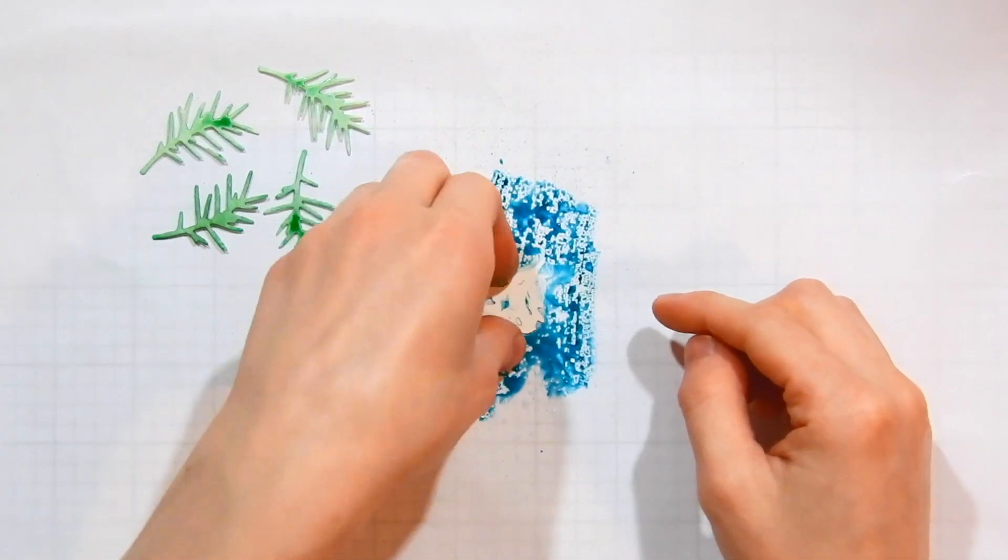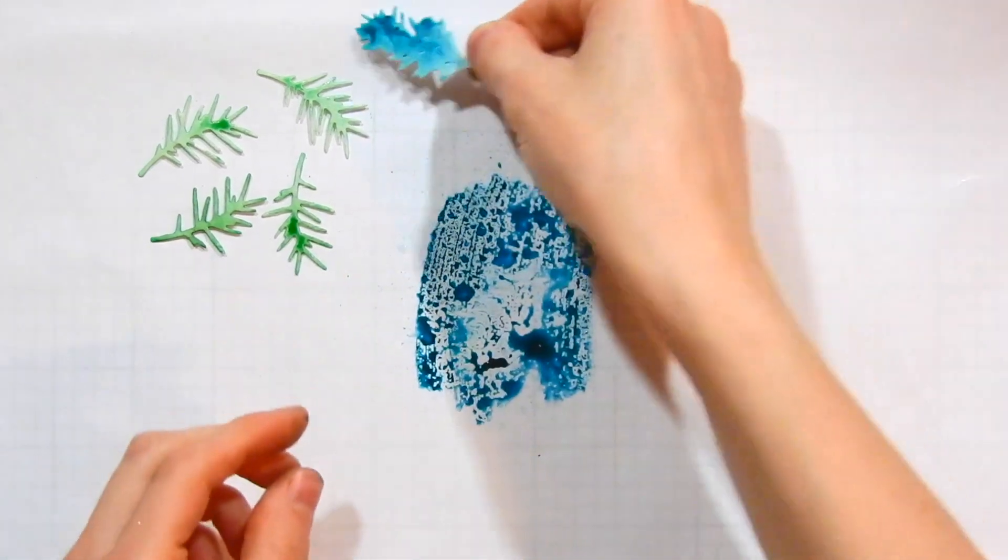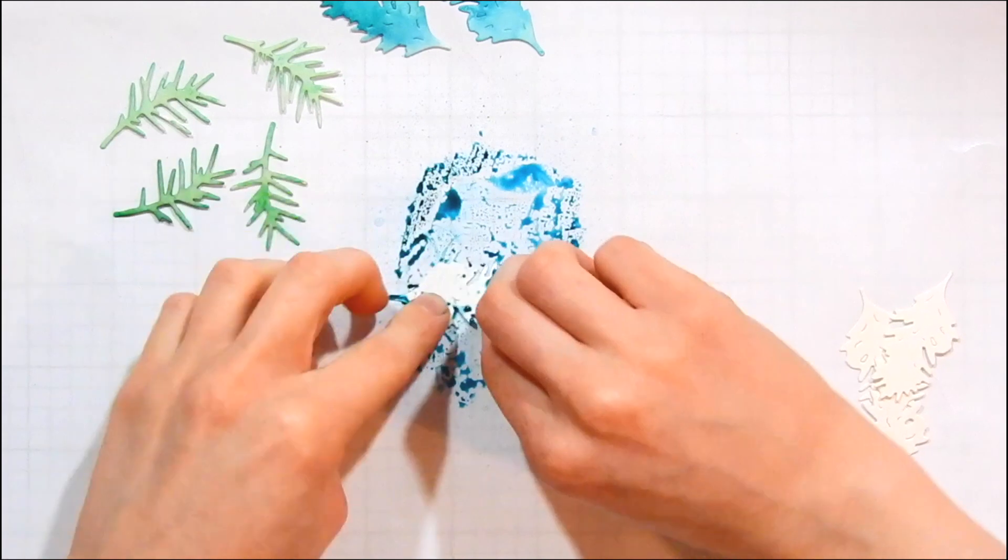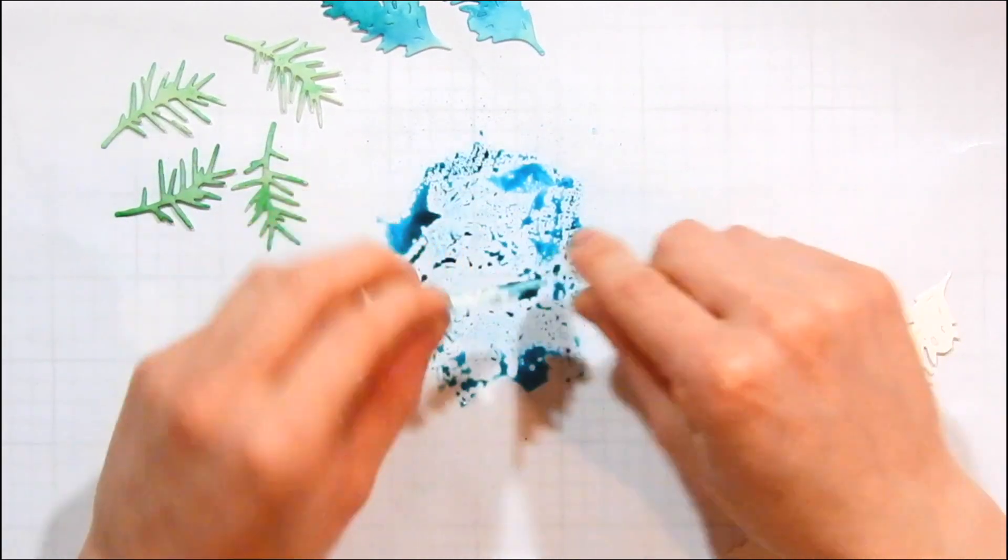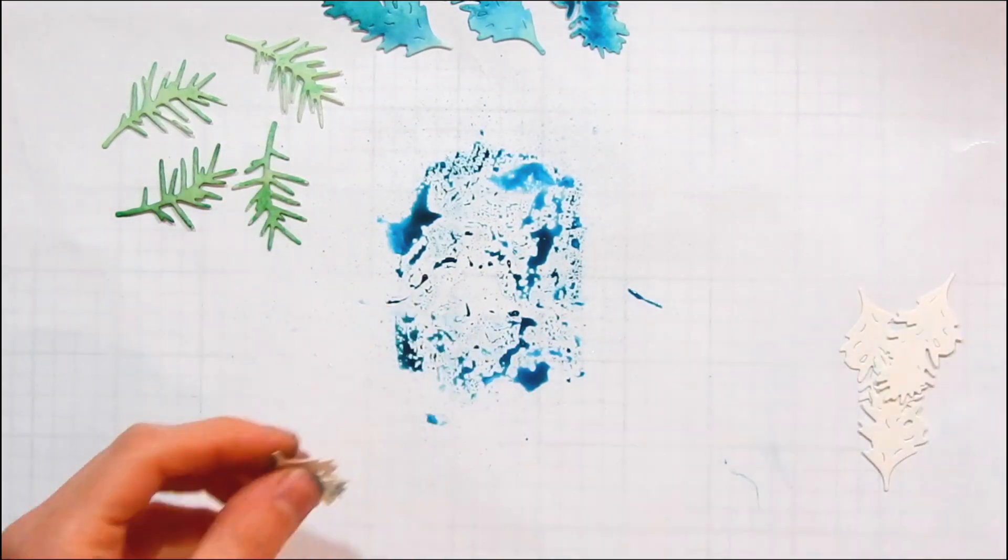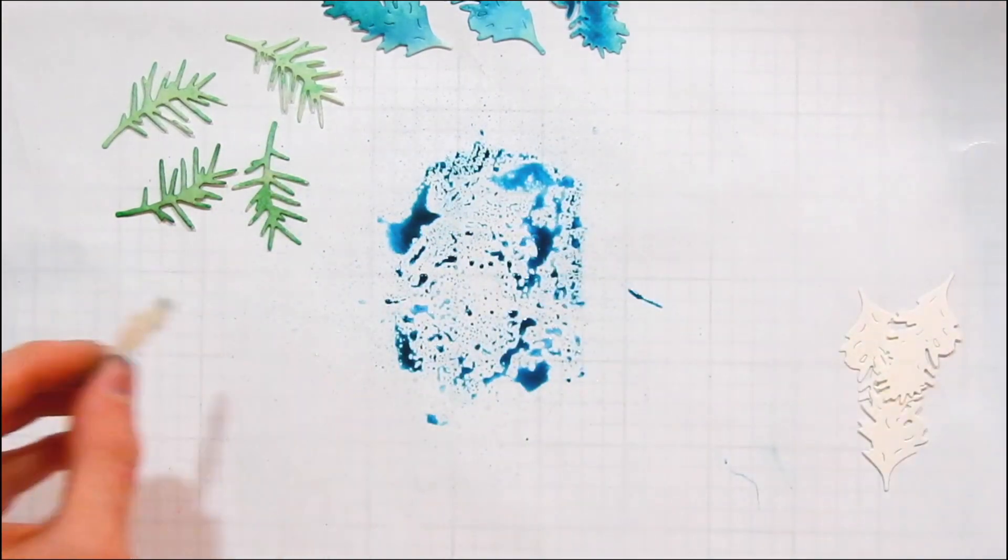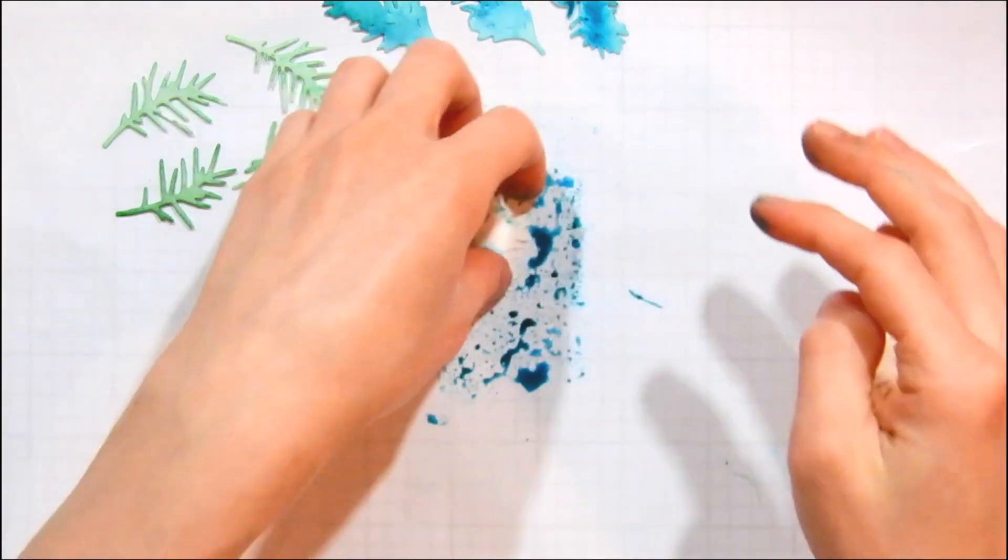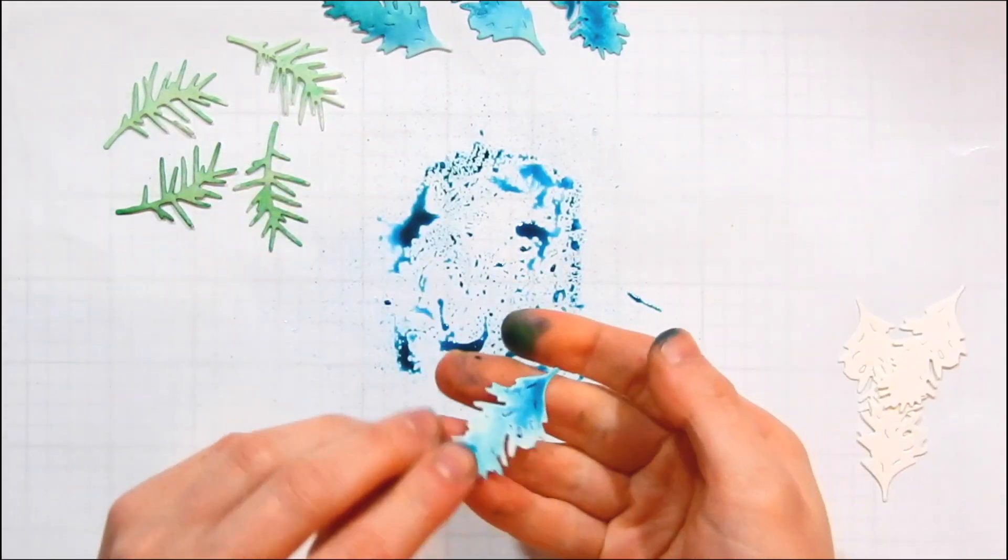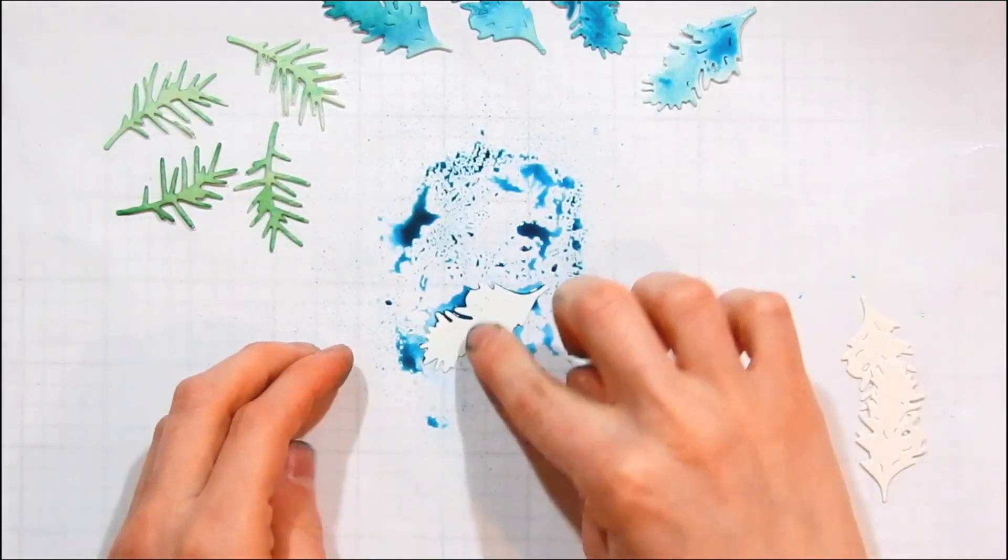To apply the watercoloring, I'm just taking some Zig Clean Color markers and scribbling onto the paper to get some color down. I spritz it with water to get the color moving, and then I just dab the pieces into the wet ink, and that creates these really fun and beautifully painted die cut pieces really easily. Now I will mention that this is very messy because your fingers are going to get very inky.